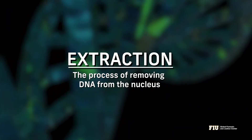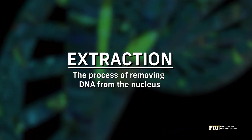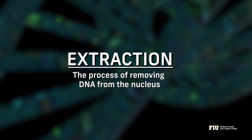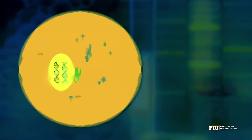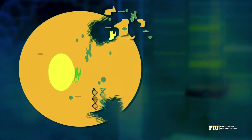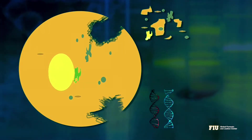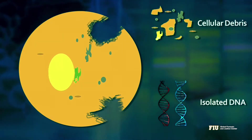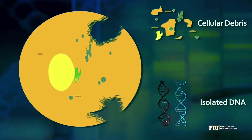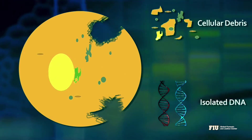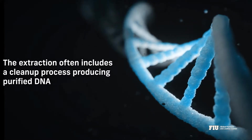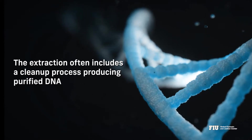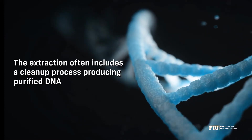The next step is removing the DNA from the nucleus, a process called extraction. Here, cells are broken open using a combination of chemicals and heat to release the contents of the nucleus, the location where the DNA is stored. The extraction often includes a cleanup process, producing purified DNA.